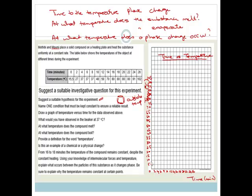Right, so at 0 degrees this is at 15.5, so it's at basically 15 degrees. At 2 minutes we're at 27. At 4 minutes we're at 37. At 6 minutes we're at 37. At 8 minutes we're at 37. At 10 we're at 48. At 12 we're at 59. At 14 we're at 70. At 16 we're at 80. And then we're at 80 till 18 to 22. Then at 24 we're at 91. And then finally at 26 we're at 102.